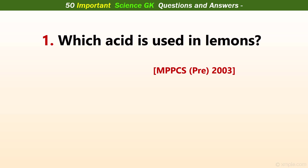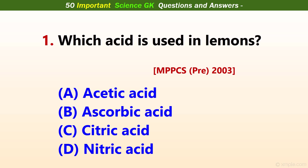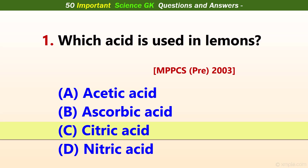Which acid is used in lemons? Answer C: Citric acid.